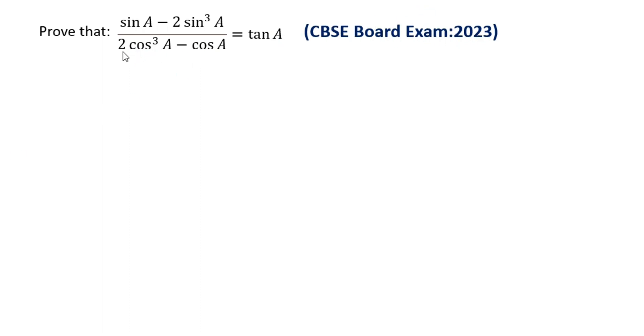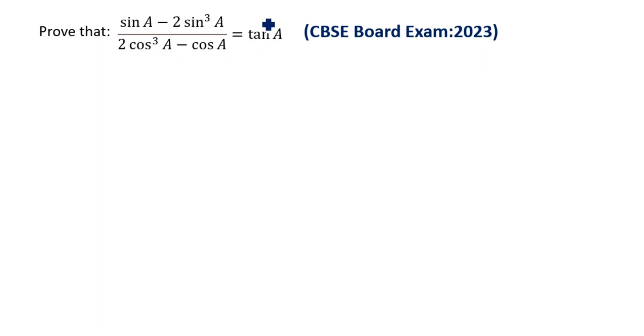Prove that sin A minus 2 sin cube A divided by 2 cos cube A minus cos A is equal to tan A. LHS equal to RHS.